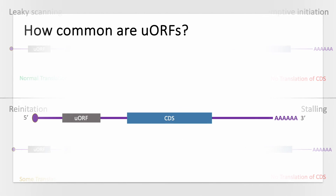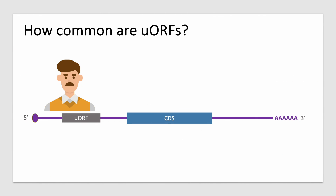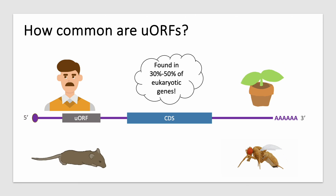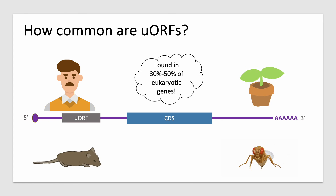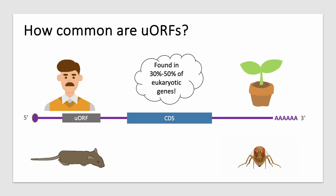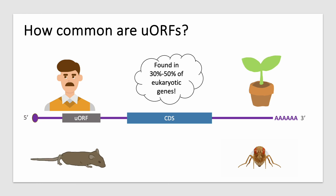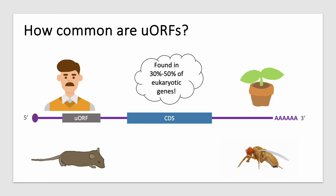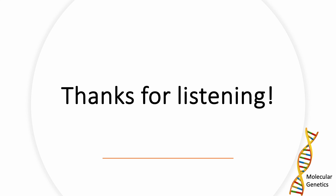In most higher eukaryotes, including humans, mice, plants, and flies, 30-50% of all of our genes contain UORFs in their 5' leaders, so it is pertinent that we continue to study the mechanisms of UORF-mediated translation regulation. Thank you for listening.